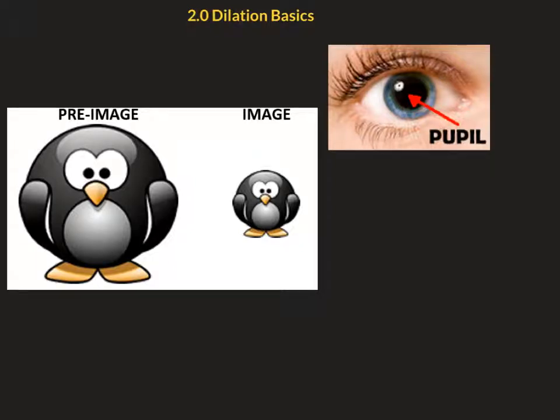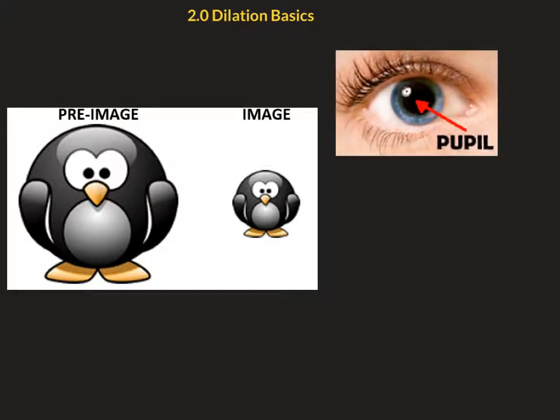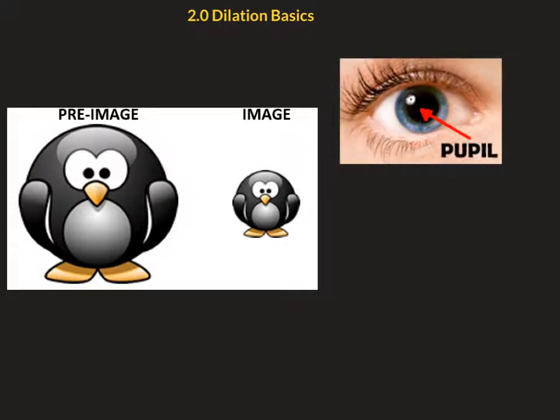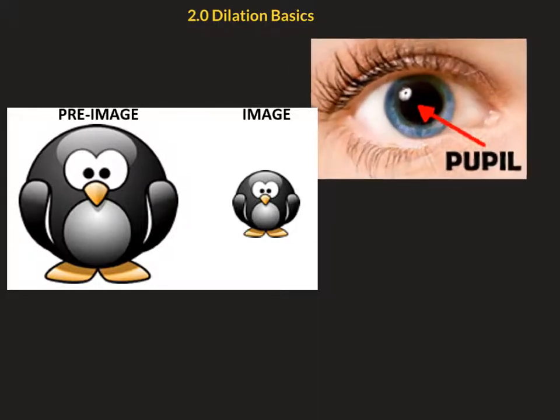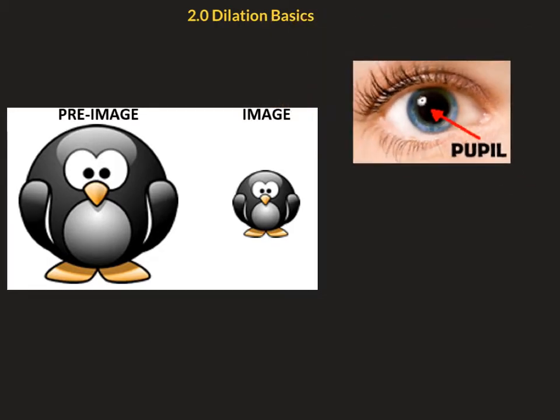We're looking at the dilation basics here. Let's start with just a few things that we actually know about dilations. We talk about dilating or the dilation of our pupil, and what that means is that the pupil will change, get bigger or smaller, based on the amount of light in the room.